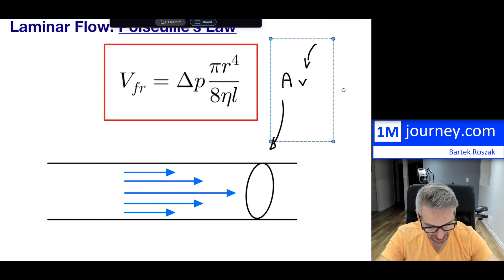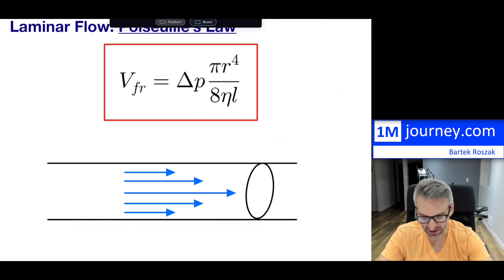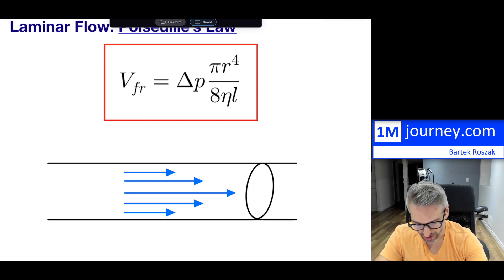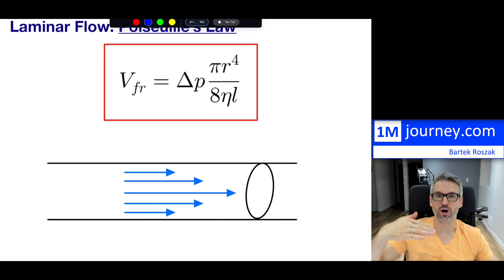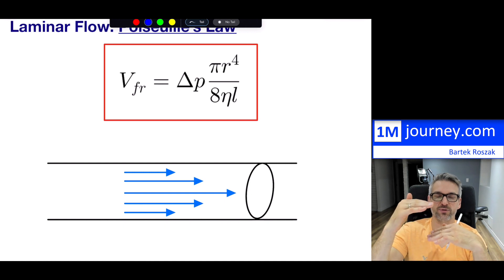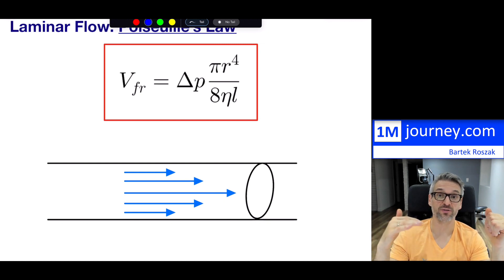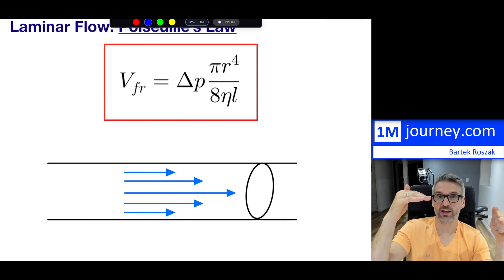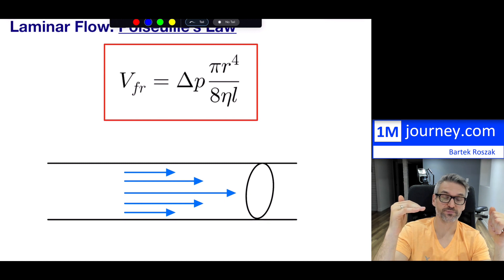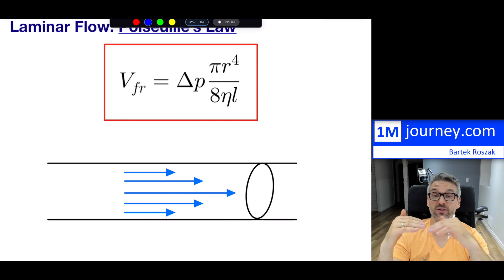Going back into this equation, one thing to notice is that I drew the actual fluid. Because of viscosity, as you get closer and closer to the walls, the fluid actually starts to slow down. As you get more towards the center, the fluid goes the fastest — this is laminar flow. The closer it is to the walls, the slower it goes; the further away, the faster it goes.